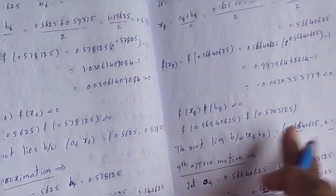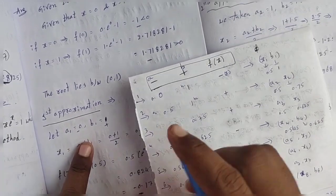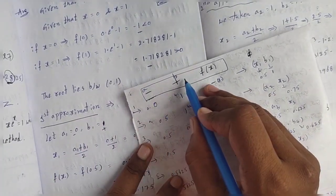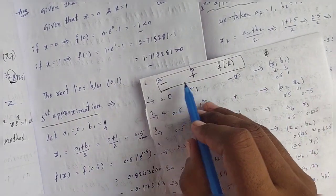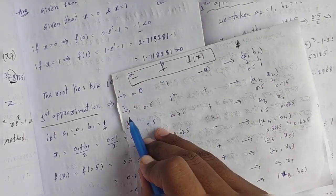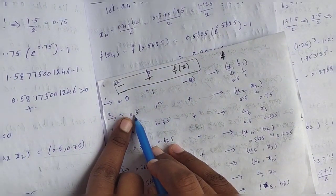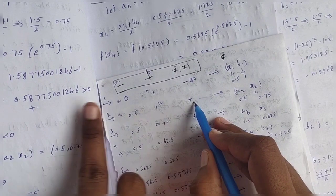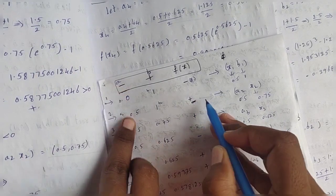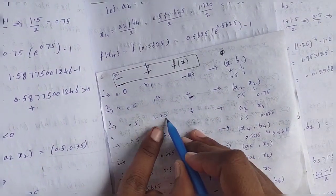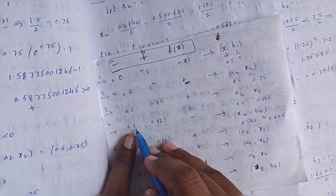To summarize the bisection method procedure: first verify f(0) is minus and f(1) is plus. Take the mean x1 = 0.5; f(x1) is minus, so the root is between x1 and b1. Second approximation: a is 0.5, b is 1, f(x) is plus. Third approximation follows the same process. Fourth approximation: f(x) is minus and minus, so update accordingly.